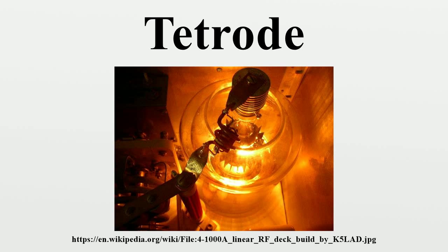Screen Grid Valve: In the screen grid class of tetrode, the main function of the second grid is to act as an electrostatic screen between the anode and the control grid in order to reduce the internal capacitance between control grid and anode. The first true screen grid valve was patented by Hiroshi Ando in 1919, and the first practical versions were built by N.H. Williams and Albert Hall at General Electric and Bernard Tellegen at Philips in 1926. This type of tetrode was developed to correct deficiencies in the triode tube, which became apparent when attempts were made to use triodes as small signal radio frequency amplifiers.